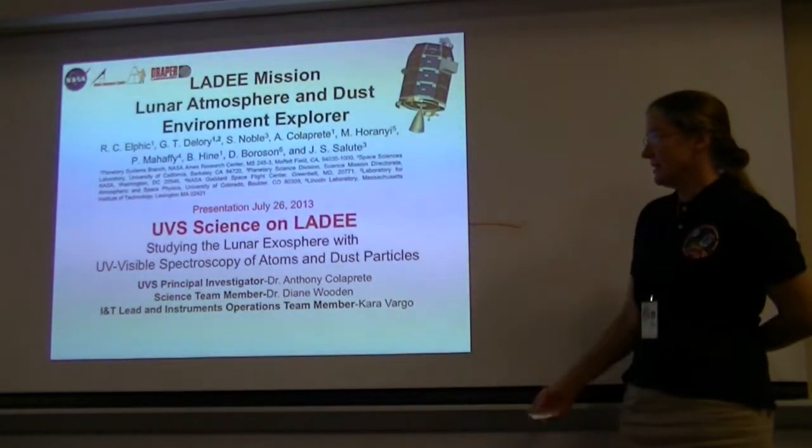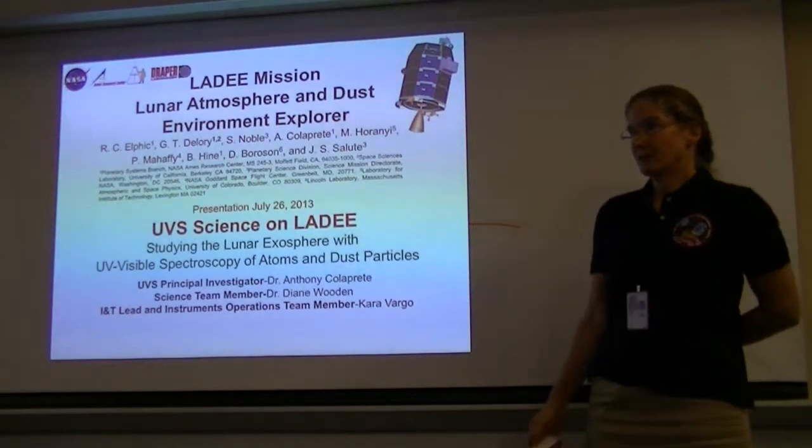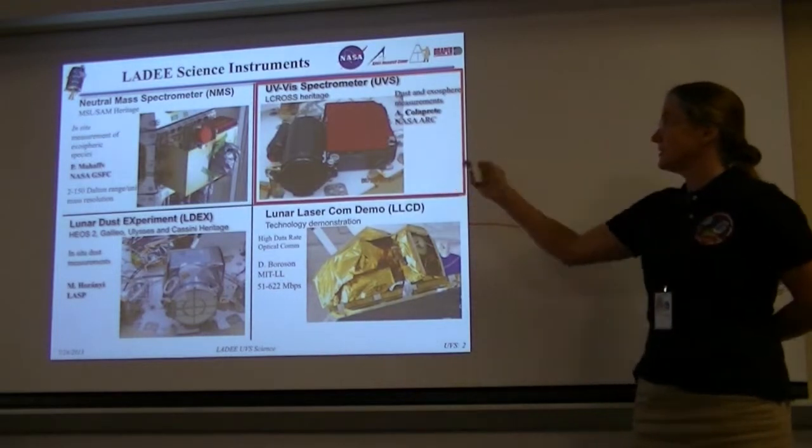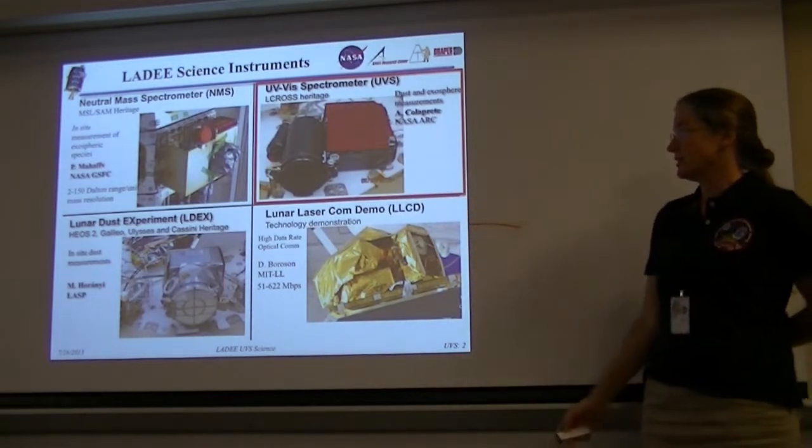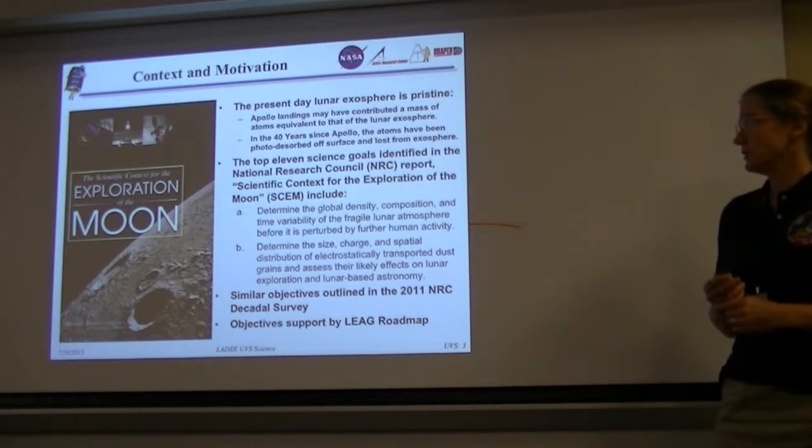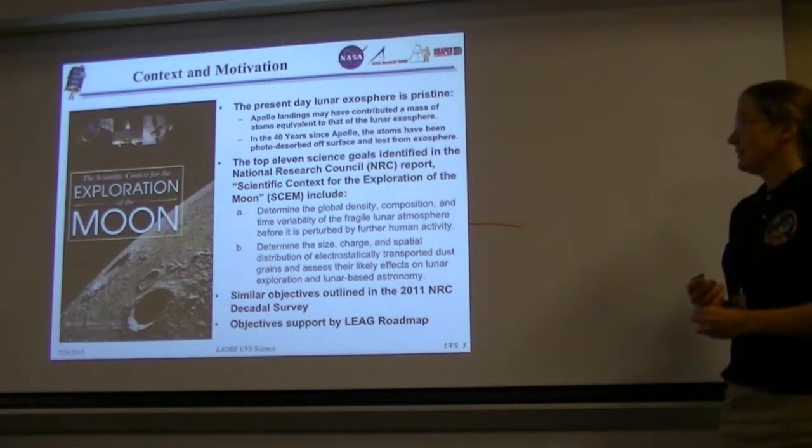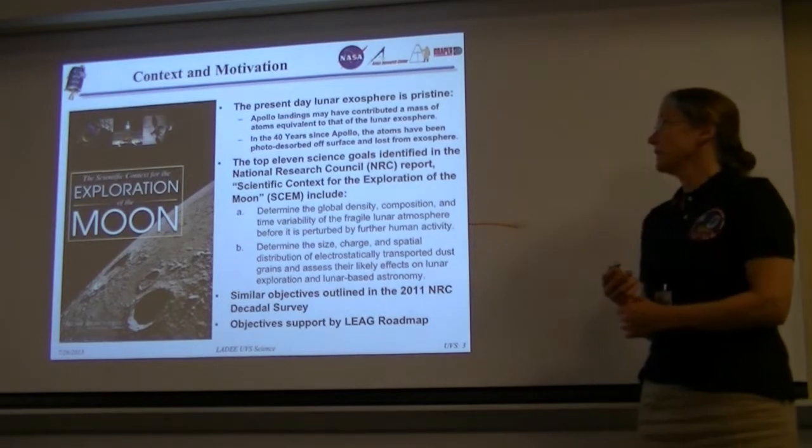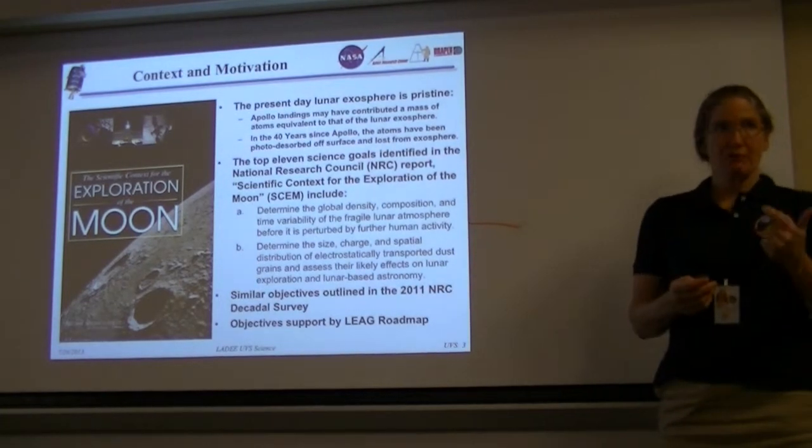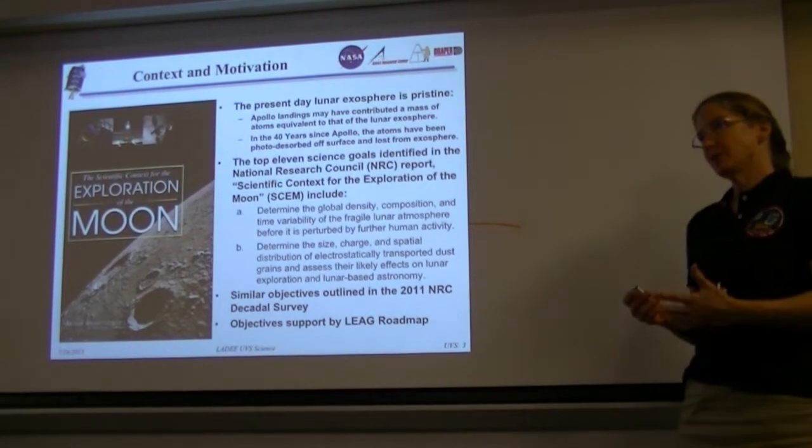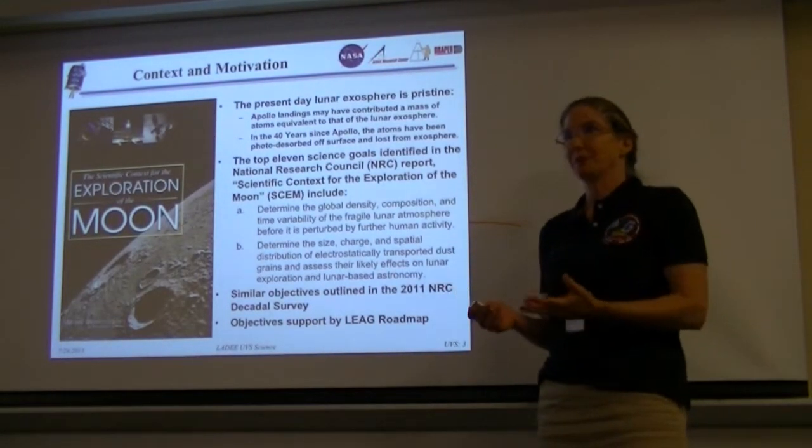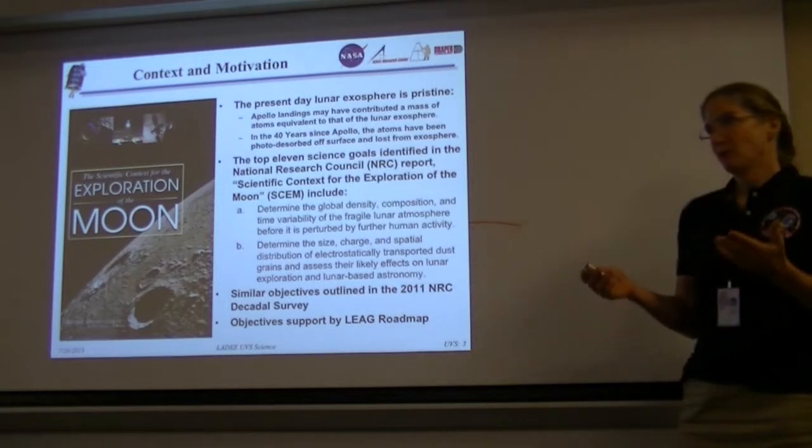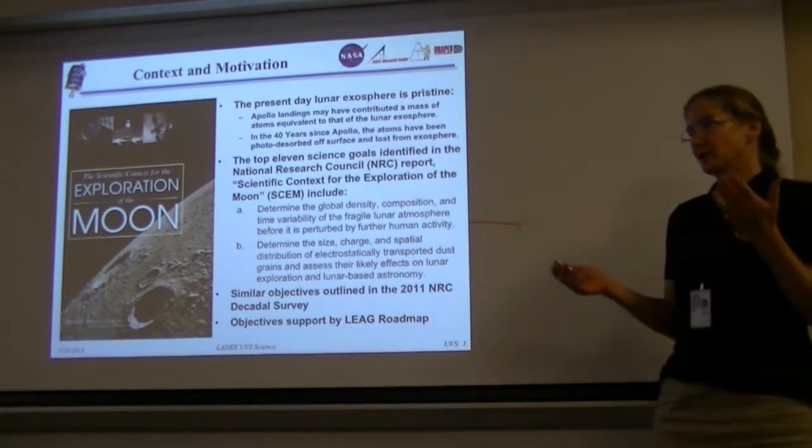I'm going to be talking about the UVS science, which stands for the UV visible spectrometer on LADEE. The context and motivation for the UVS instrument is that we wanted to analyze the structure and variability of the lunar exosphere. The lunar exosphere is like a good vacuum on Earth, equivalent to where the space station is currently flying.